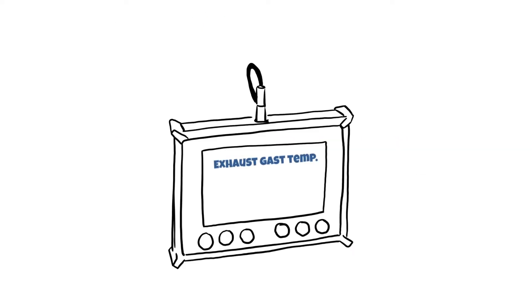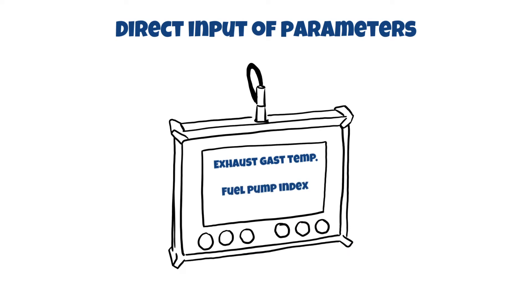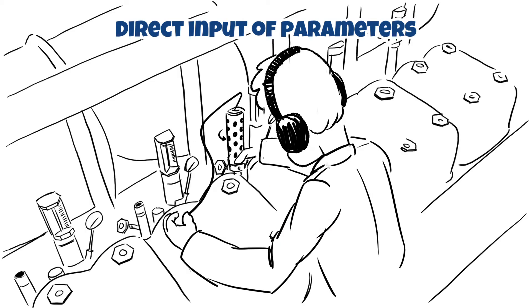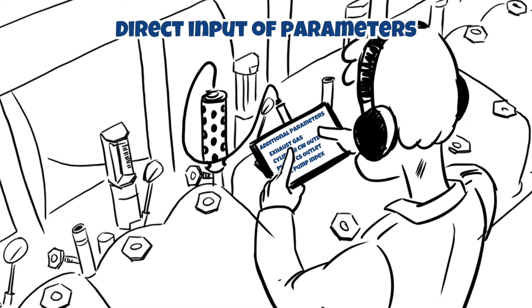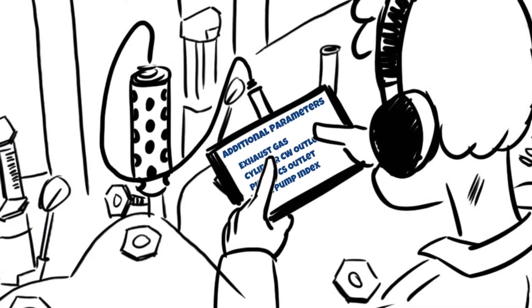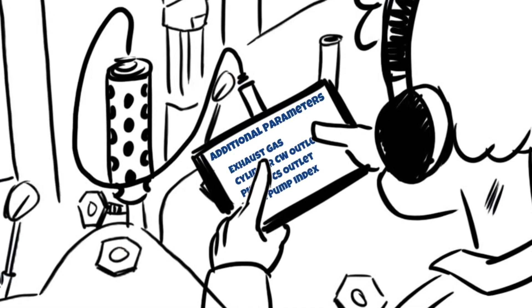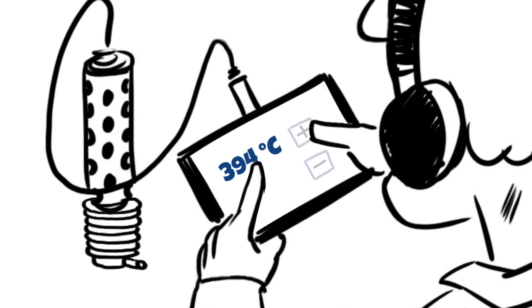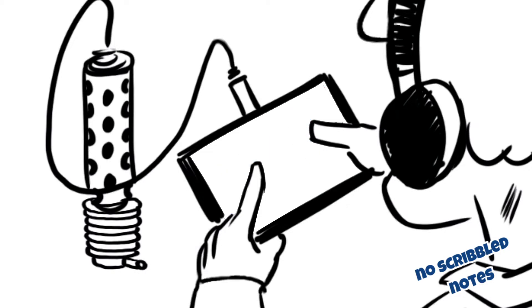Additional parameters. Important additional indicators like exhaust gas temperature, fuel pump index or any other as you wish can be entered directly in the device while you're at the engine or right after the measurement when you're back in your control room. Since it is essential to get those readings at the identical time of measurement, there is no need to write them down and enter them later at the computer any longer.